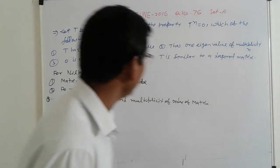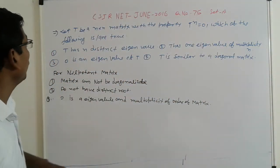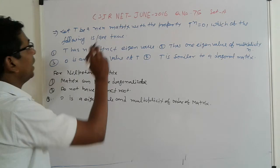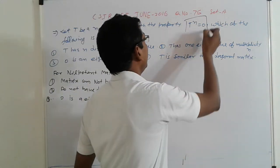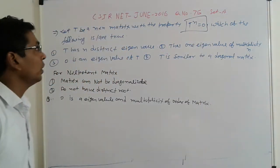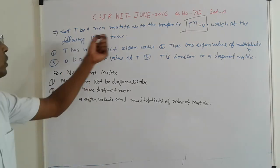Here is very easy and logical. Let T be the n cross n matrix with the properties of this: T raised to n is equal to 0, which of the following is true.